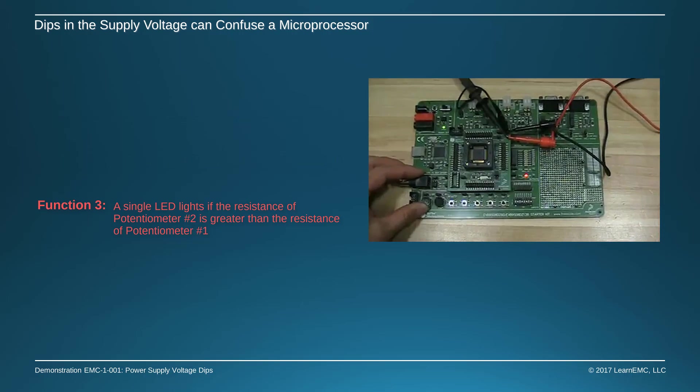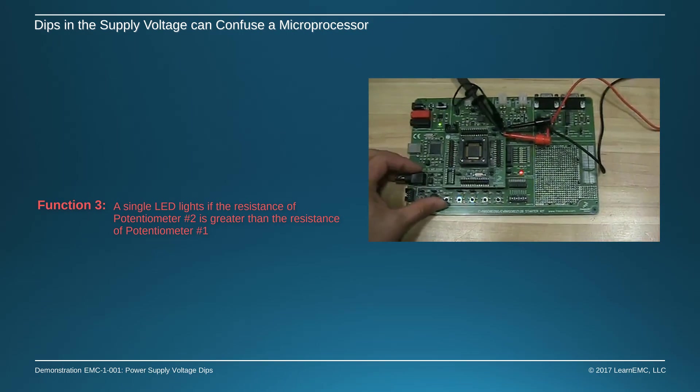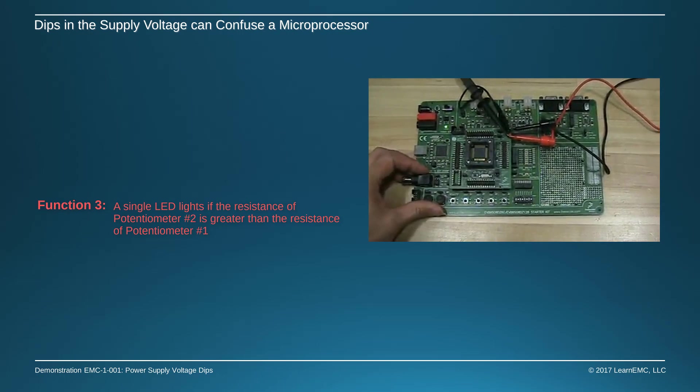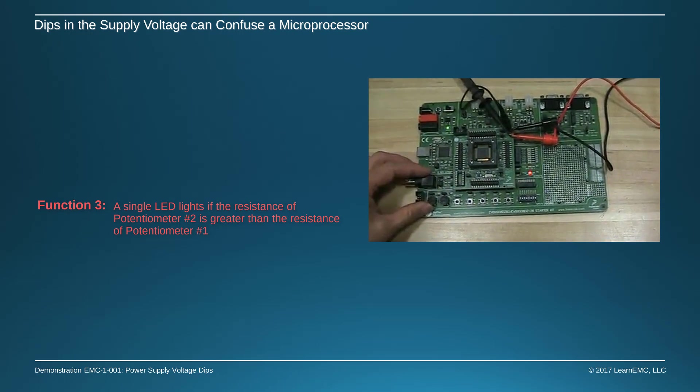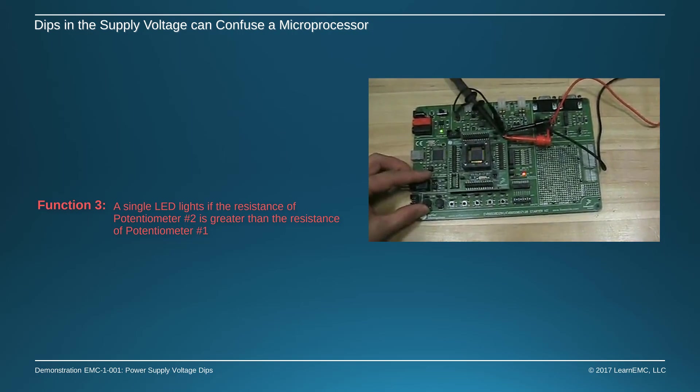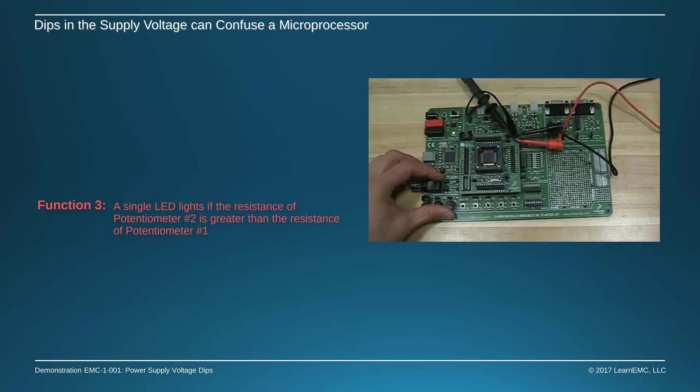For example, the processor is currently set to perform function 3. The LED is comparing the positions of the two potentiometers and lighting if the potentiometer on the right has a higher resistance than the potentiometer on the left.